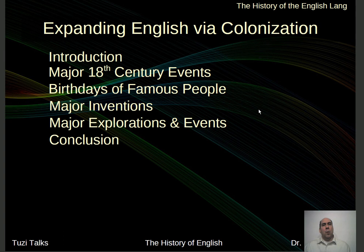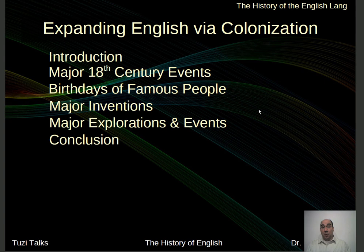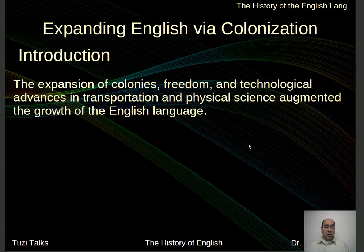Greetings all. Welcome to another session of Twosie Talks. I wanted to get a little more description into what was going on during the 18th century — the changes, major events, inventions that appeared in the late 1700s and early 1800s, major explorations, to give you a bigger picture about what was happening with all of this expansion with regard to mobility. It was during this time that we're beginning to move out into other areas of the world, and English is going to be the primary language that goes out and does all of these changes. The expansion of colonies, the expansion of freedom, and technological advances in transportation and physical science more greatly expanded the growth of the English language.